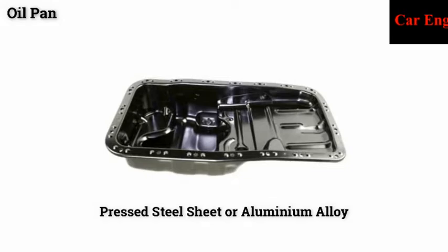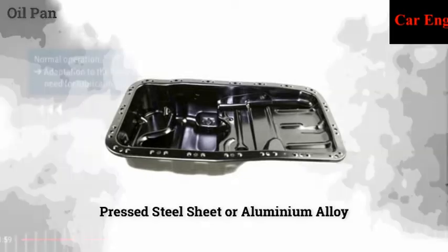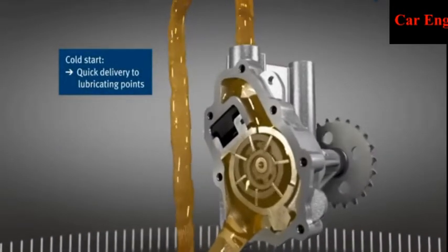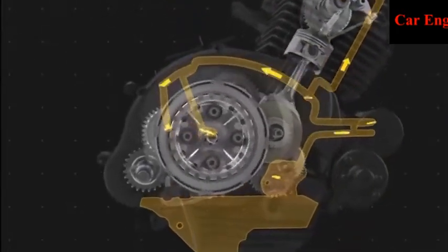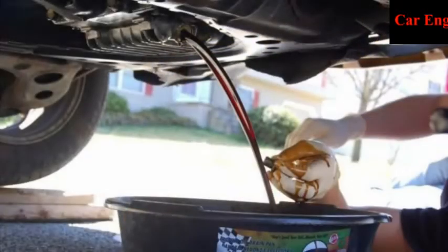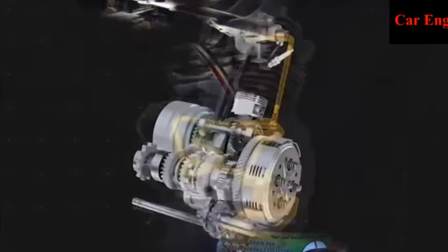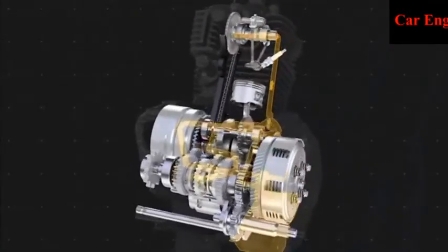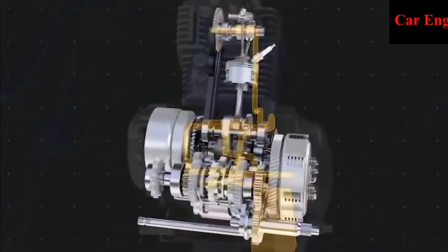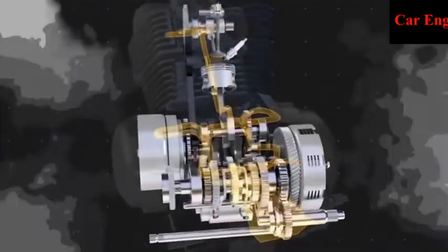Generally, the sump is made of pressed steel sheet, or aluminum alloy casting is also used. The oil pump in the lubricating system draws oil from the oil pan and sends it to all working parts in the engine. The oil drains off and runs down into the pan. Thus, there is a constant circulation of oil between the pan and the working parts of the engine.